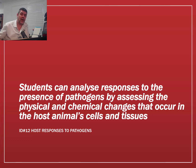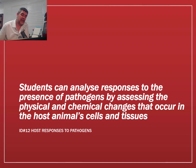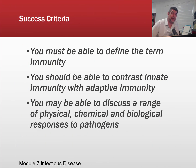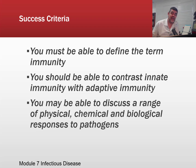This encompasses primarily the first and second lines of defence. We want you to be able to define the term immunity, contrast innate and adaptive immunity, and discuss a range of the physical, chemical and biological responses to pathogens. We're going to wrap a number of things together here and hopefully by the end of the next couple of videos, you'll have a good understanding of how our bodies combat pathogens.